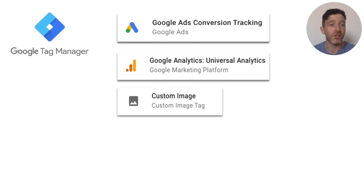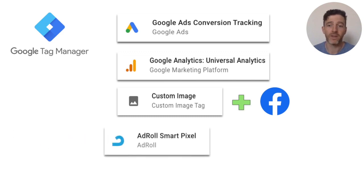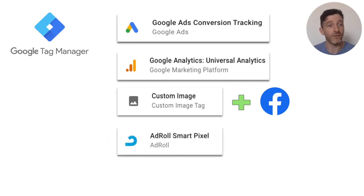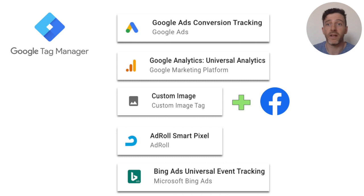The Custom Image Tag was chosen primarily to connect your account with Facebook using the Facebook Pixel. The AdRoll SmartPixel tag was conveniently available so that we could replace our existing integration with AdRoll. And we've added support for Bing Ads, so if you're advertising on the Bing search engine, you can also track your ads from there too.